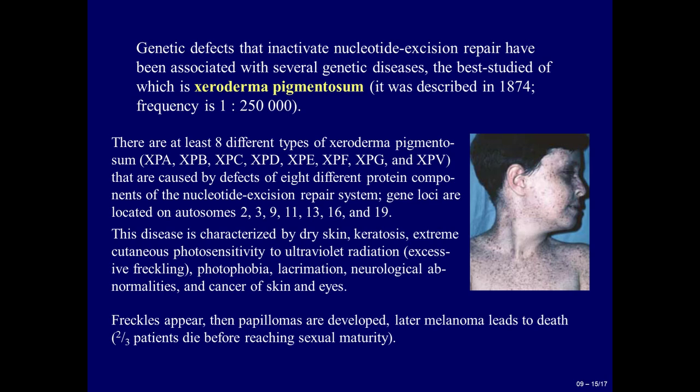There are at least eight different types of xeroderma pigmentosum: XPA, XPB, XPC, XPD, XPE, XPF, XPG, and XPV, caused by defects in eight different protein components of the nucleotide excision repair system. Gene loci are located on chromosomes 2, 3, 9, 11, 13, 16, and 19.